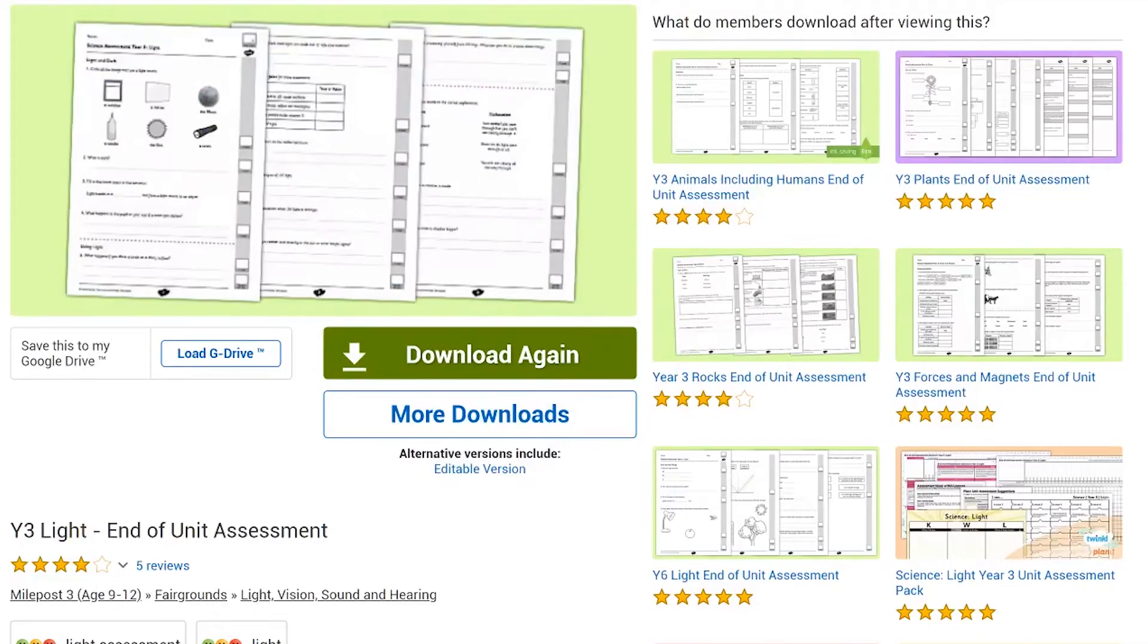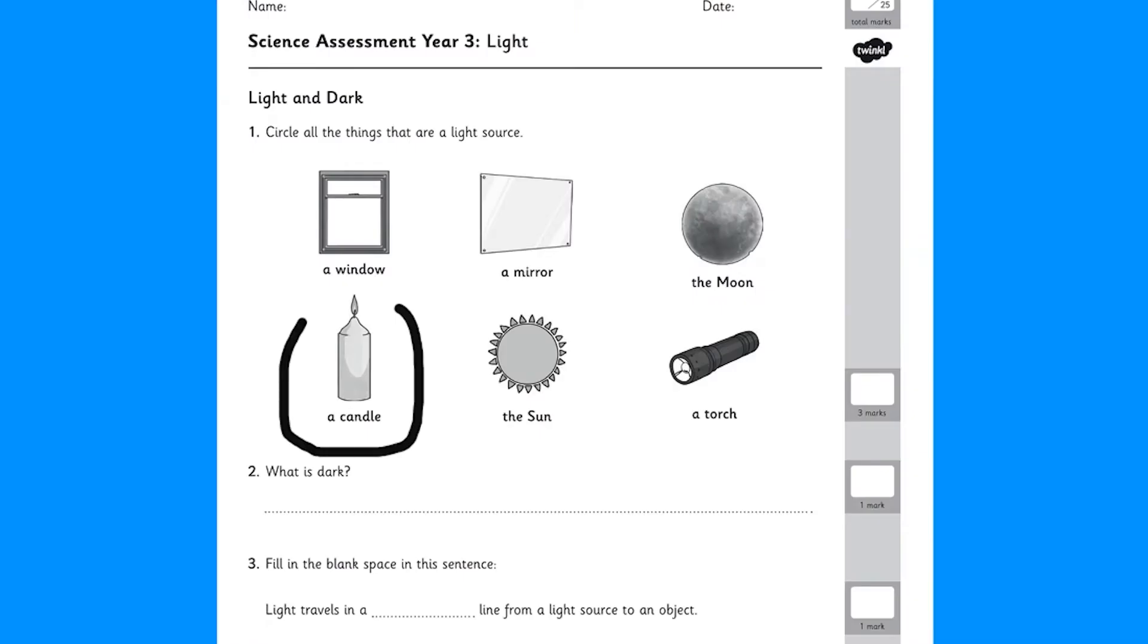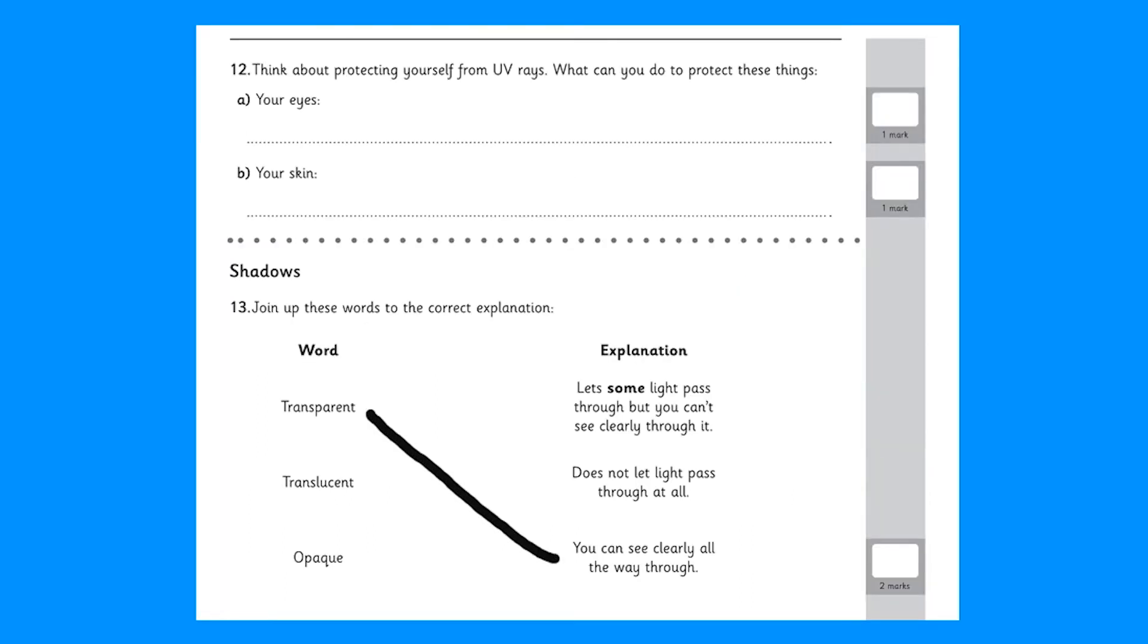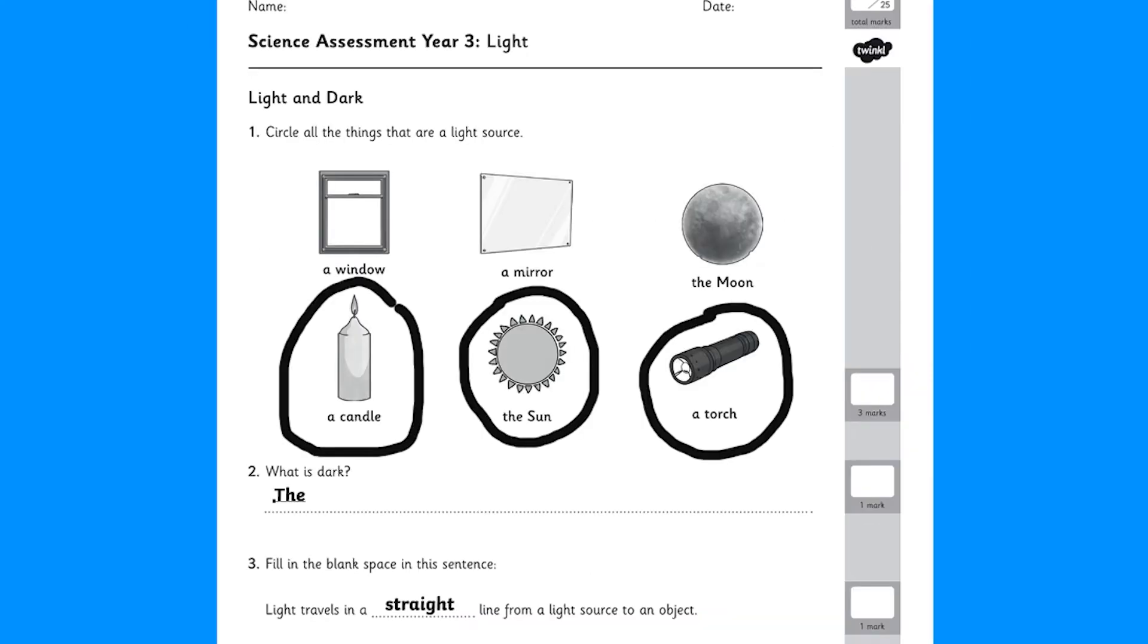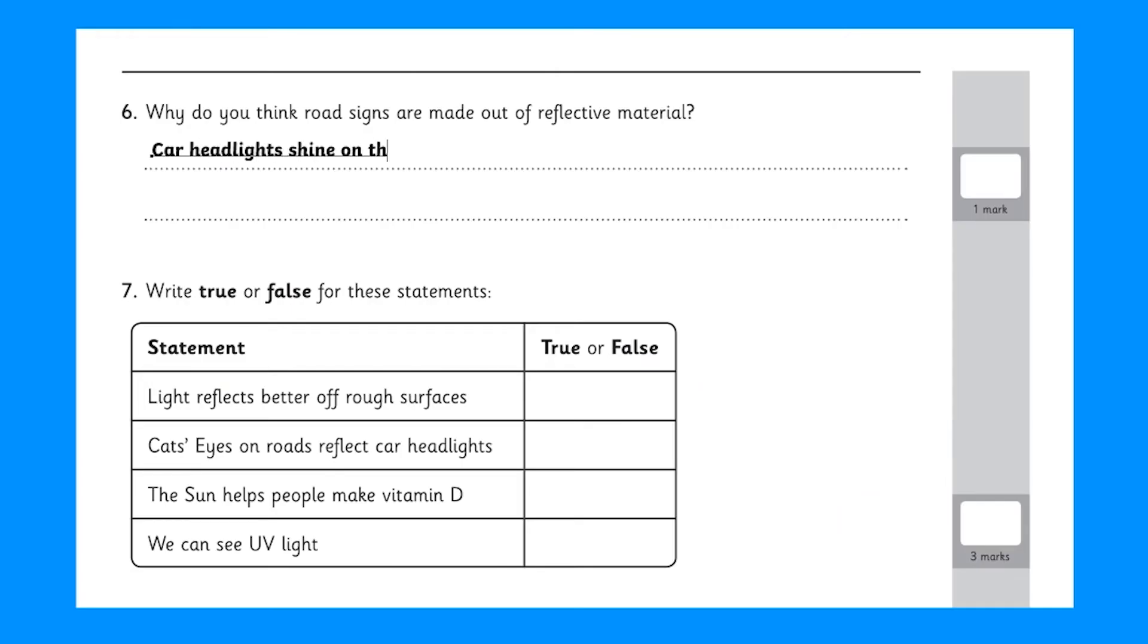Year 3 science assessments are similar but simplified. Children might have to circle the correct answers or fill in the blanks, join fewer matching statements or write a simple one-sentence explanation. These simple time-efficient assessments will let you find out what they understand of these key concepts.